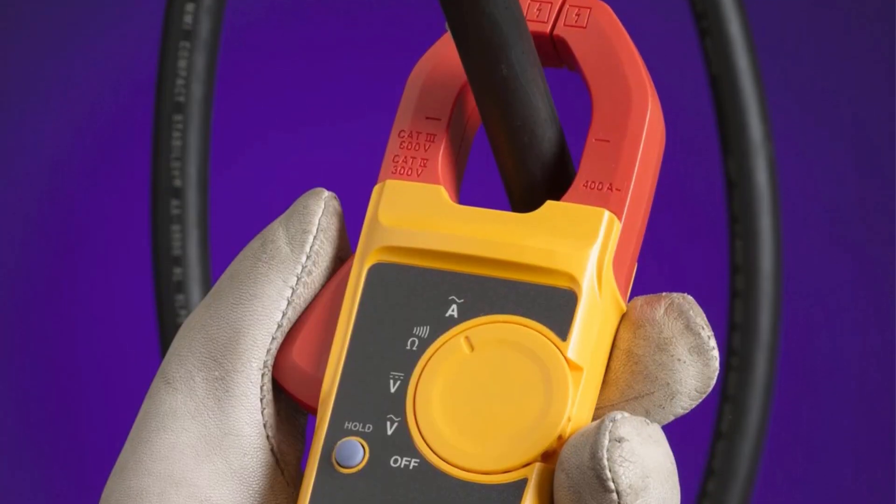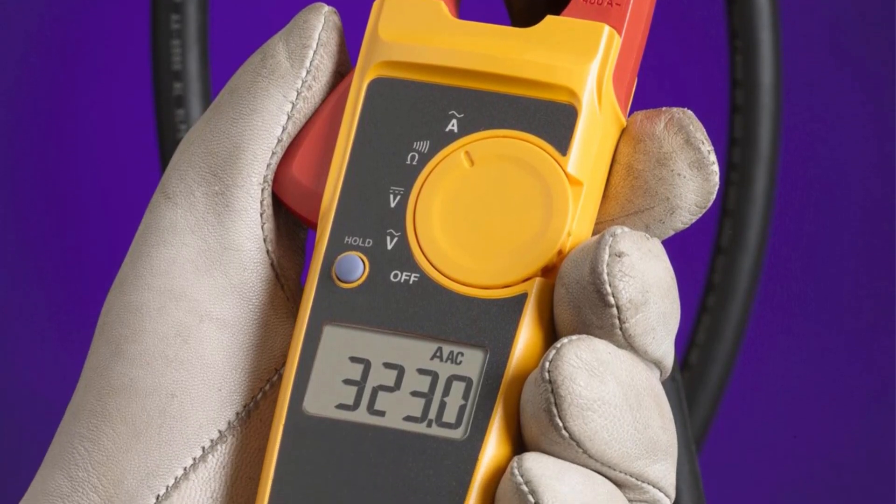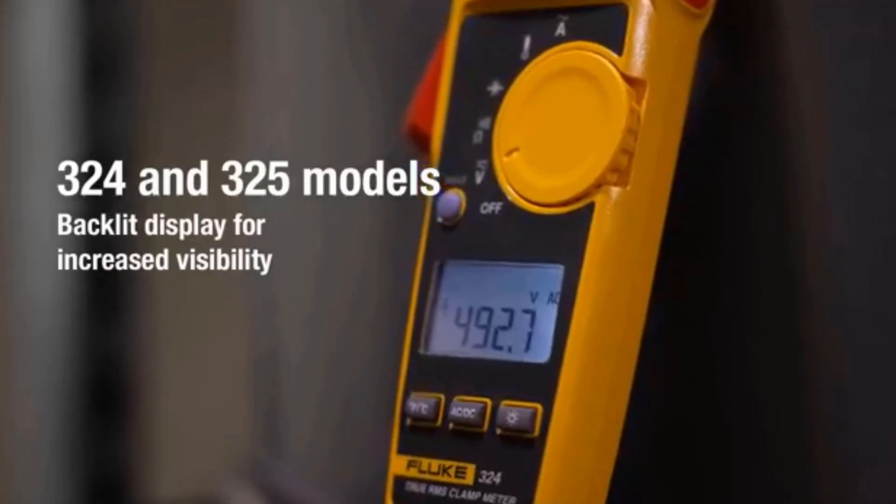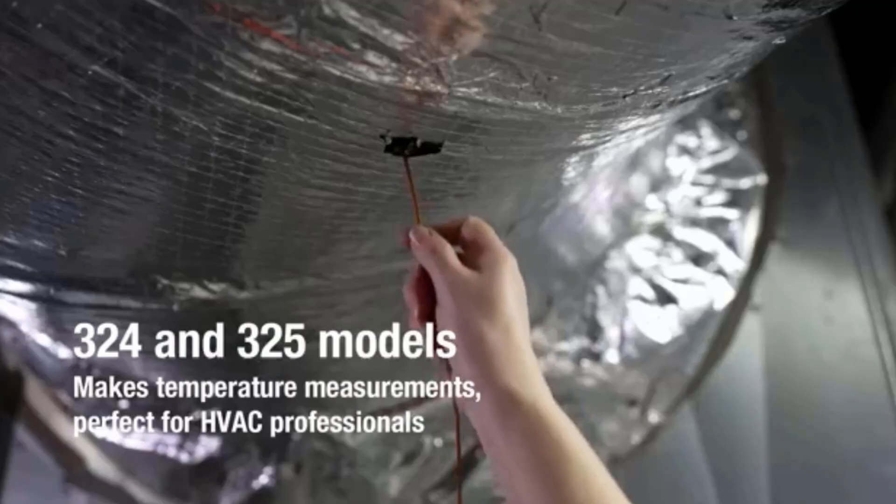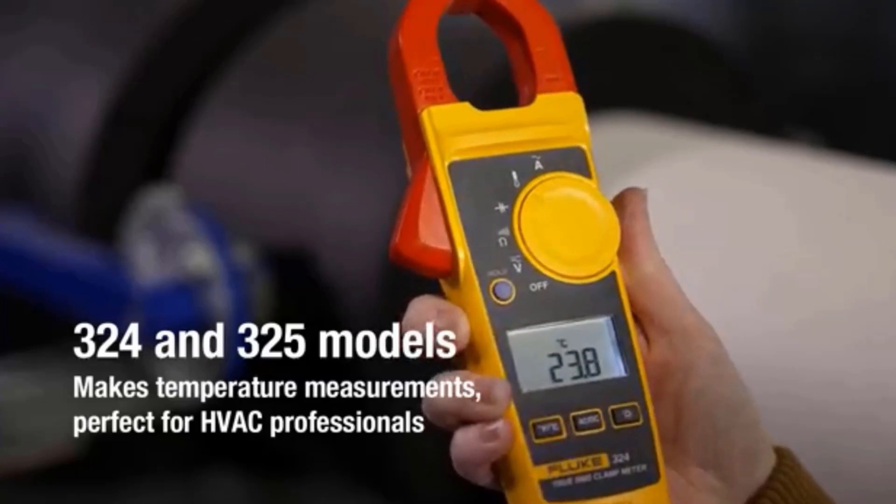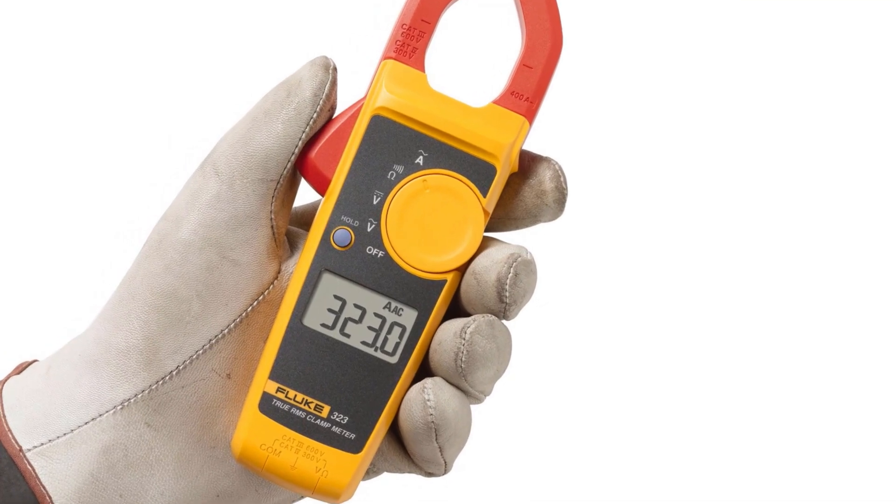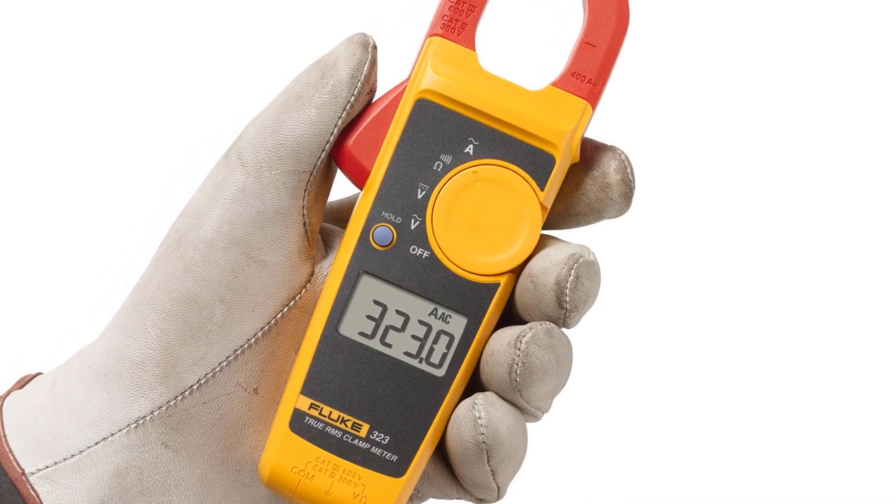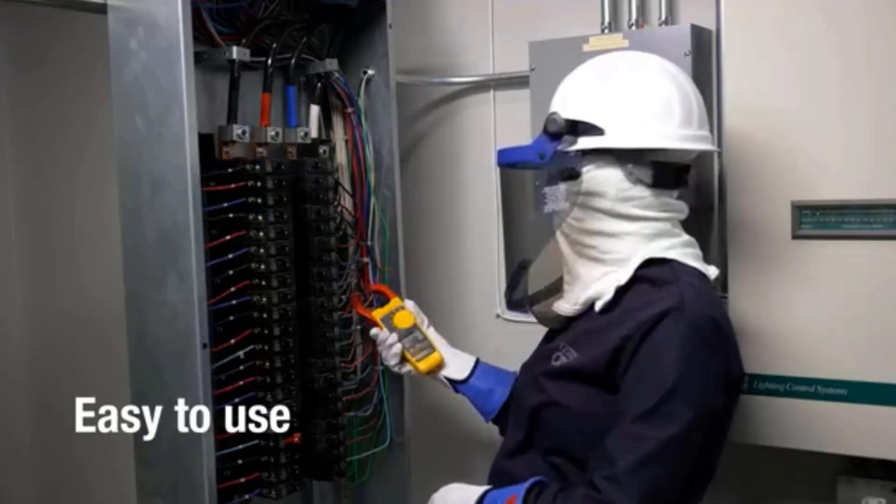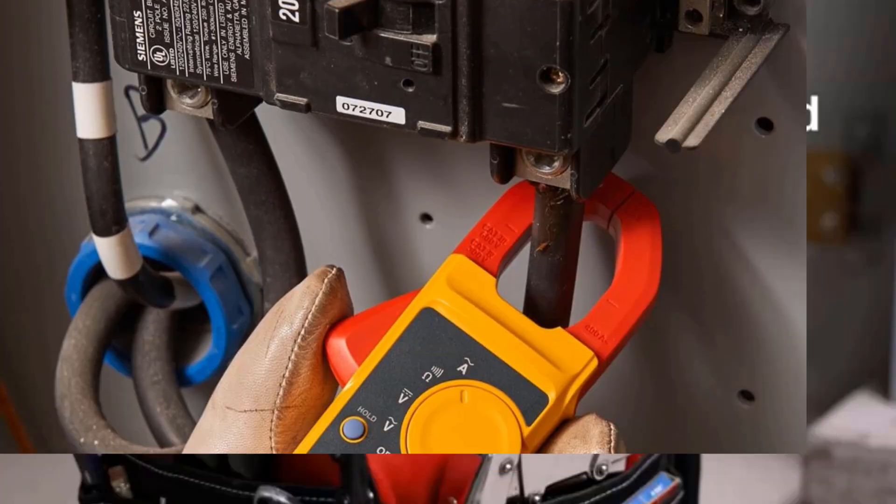This clamp meter measures AC current up to 400A and provides highly accurate readings for AC-DC voltage up to 600V. It also features resistance measurement up to 4K ohms and continuity testing, making it an essential tool for troubleshooting circuits, breakers, and wires. The Fluke 323 boasts true RMS technology, delivering precise readings even in noisy or distorted electrical environments. Its slim, ergonomic design ensures easy handling in tight spaces, while the durable construction guarantees longevity.